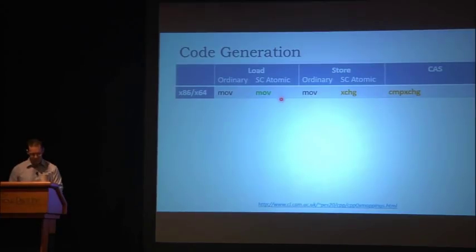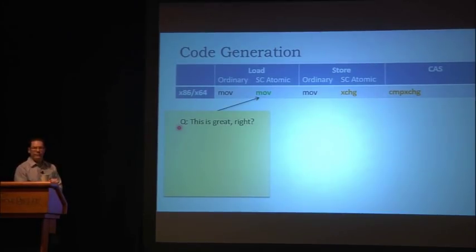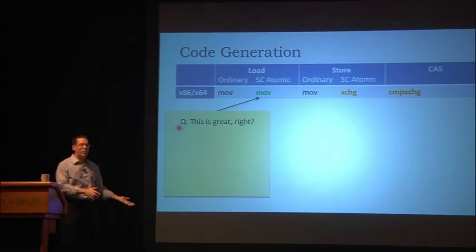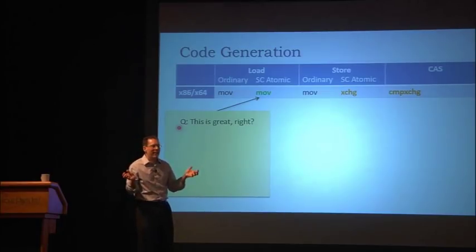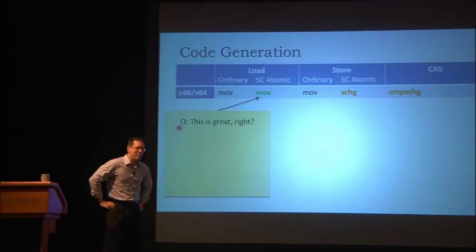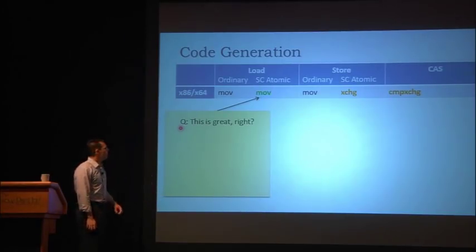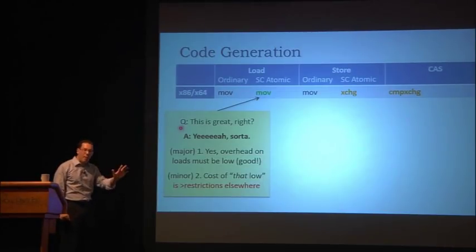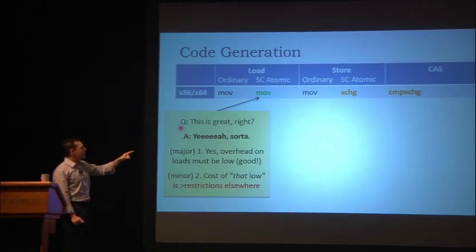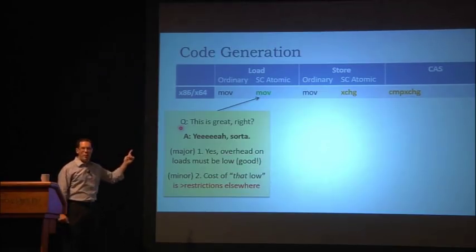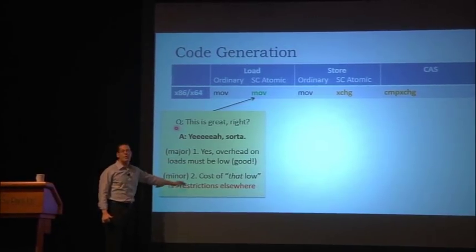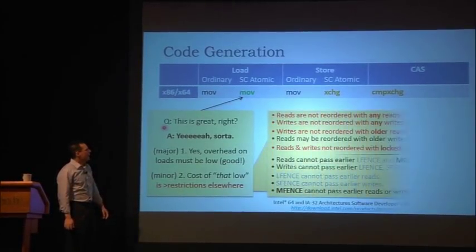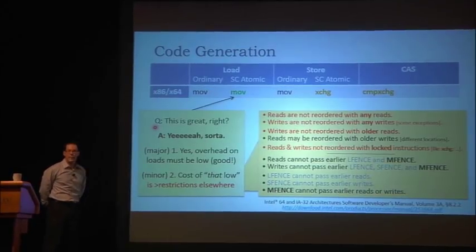So SC atomic loads on x86 are the same as ordinary loads — ordinary loads are as strong as SC atomic loads on x86. That's why they're the same. We have low overhead loads, but the cost is you have to be paying somewhere else with greater restrictions. Here, from the Intel x86/x64 memory model — finally written down around 2008 — reads are not reordered with any reads, and writes are not reordered with older reads. It's starting to sound very close to a sequentially consistent machine.